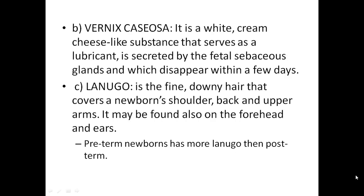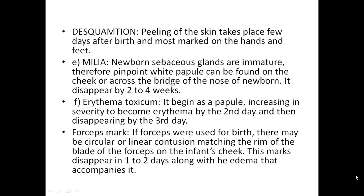Vernix caseosa is a white, creamy, cheese-like substance that serves as a lubricant, secreted by the fetal sebaceous glands, and disappears within a few days. Lanugo is the fine downy hair that covers the newborn's shoulders, back, and upper arms, and may also be found in other areas. Preterm newborns have more lanugo than post-term newborns.